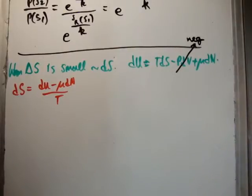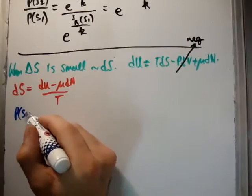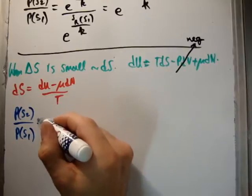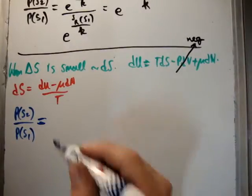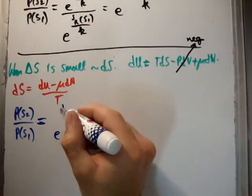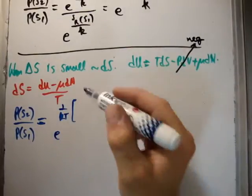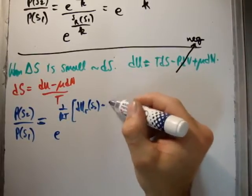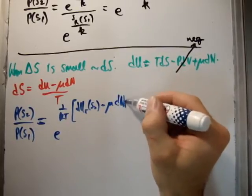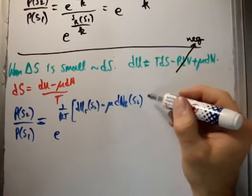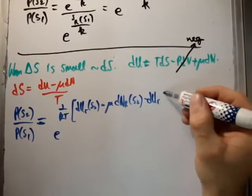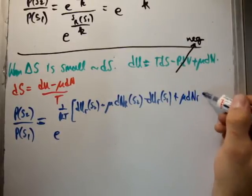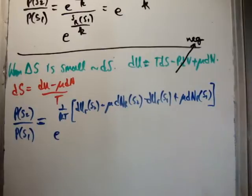Alright, so when you plug that in, our probabilities become the following. The probability of state S2 divided by the probability of state S1 is going to be equal to e to the 1 over kT, times: dU reservoir when the atom is in state S2, minus mu dN reservoir when the atom is in state S2, minus dU reservoir when the atom is in state S1, plus mu times dN reservoir when the atom is in state S1.